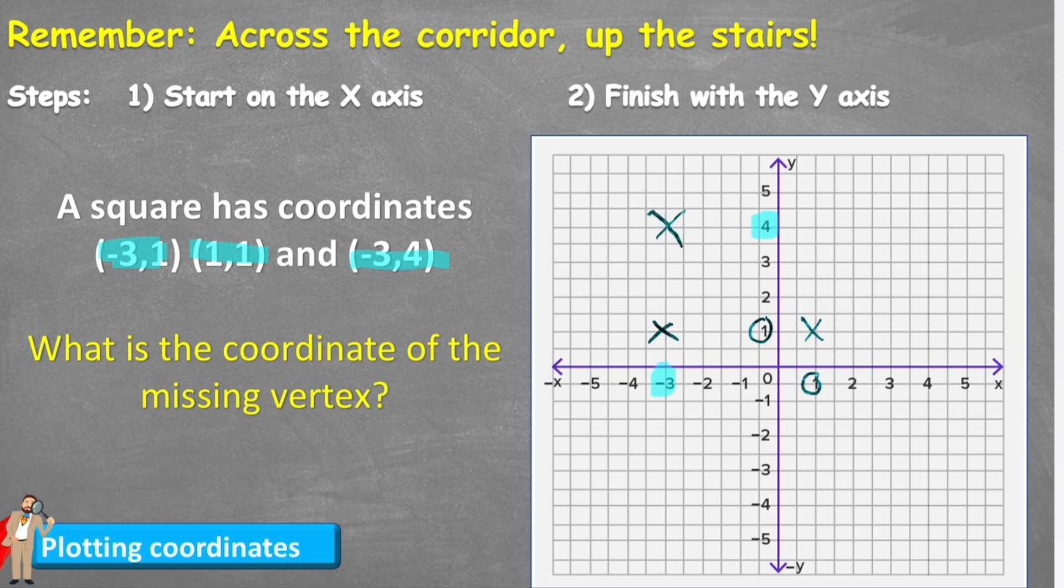Okay, so they're the three coordinates that we have, but we want to make a square. So I can see that my missing coordinate is going to be over here somewhere, but where exactly? Well, I can draw a line from this coordinate and from this coordinate, and I can see that my missing vertex must be just here.